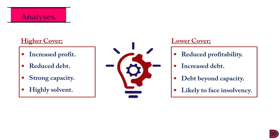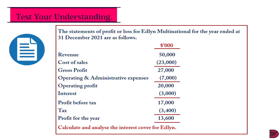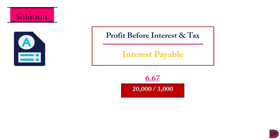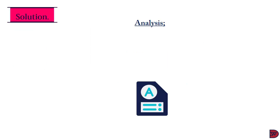Let's test our understanding. The statement of profit or loss for Edlin Multinational for the year ended 31st December 2021 is as follows: we have revenue, cost of sales, gross profit, operating and administrative expenses leading to operating profit — which we'll be using — then the interest — which we'll also be using — and we arrive at profit before tax, tax, and profit for the year. We are supposed to calculate and analyze the interest cover for Edlin. For the solution, we restate the formula: Profit Before Interest and Tax divided by interest payable. The answer is 6.67, arrived at by dividing the profit before interest and tax of 20,000 by the interest payable of 3,000.